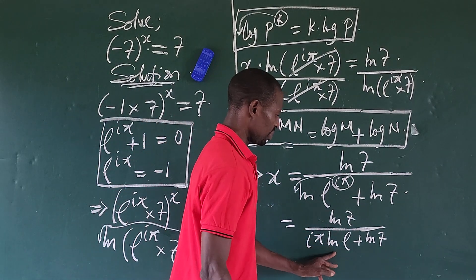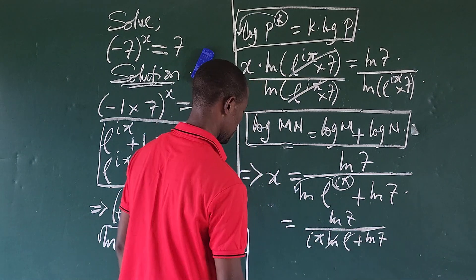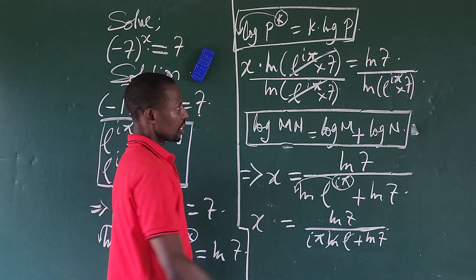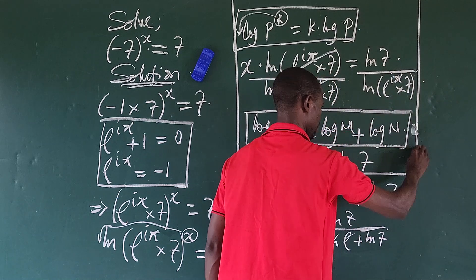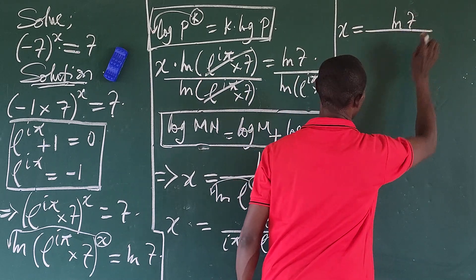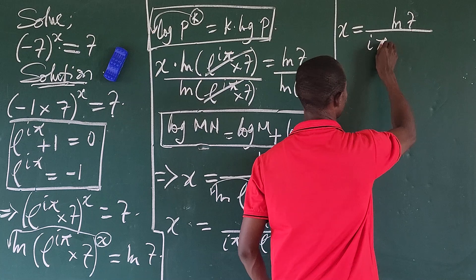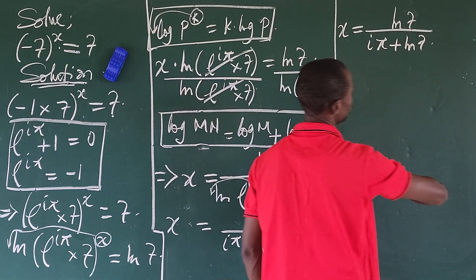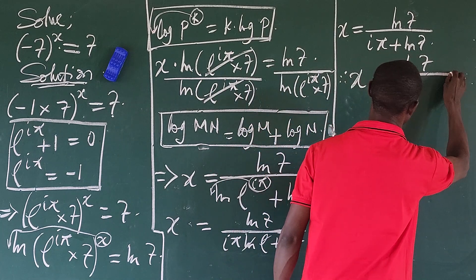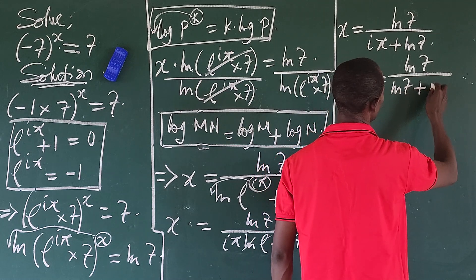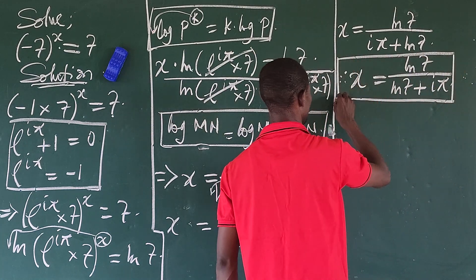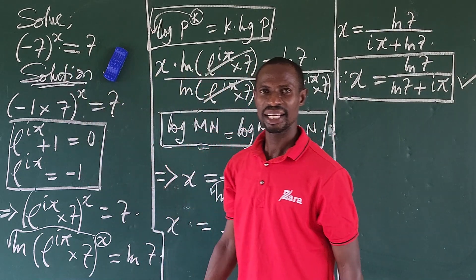Now look at this — we are having ln(e), and ln(e) equals one, so that term leaves the system. The final value for x is therefore: x equals ln of seven, all over, ln of seven plus iπ. If we rearrange the denominator, this is: x equals ln(7) over ln(7) plus iπ. This is the value of x that satisfies the original equation.